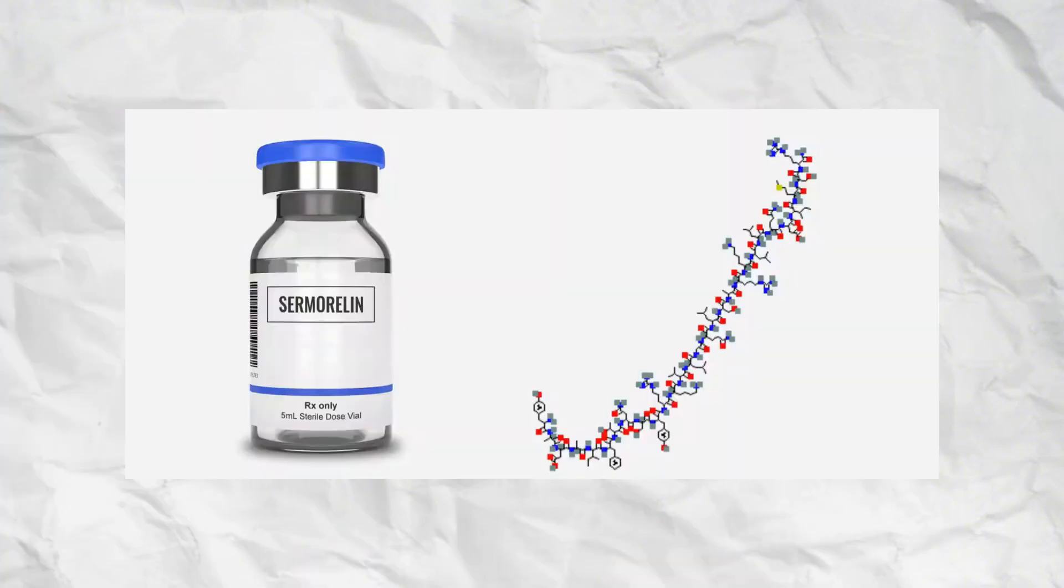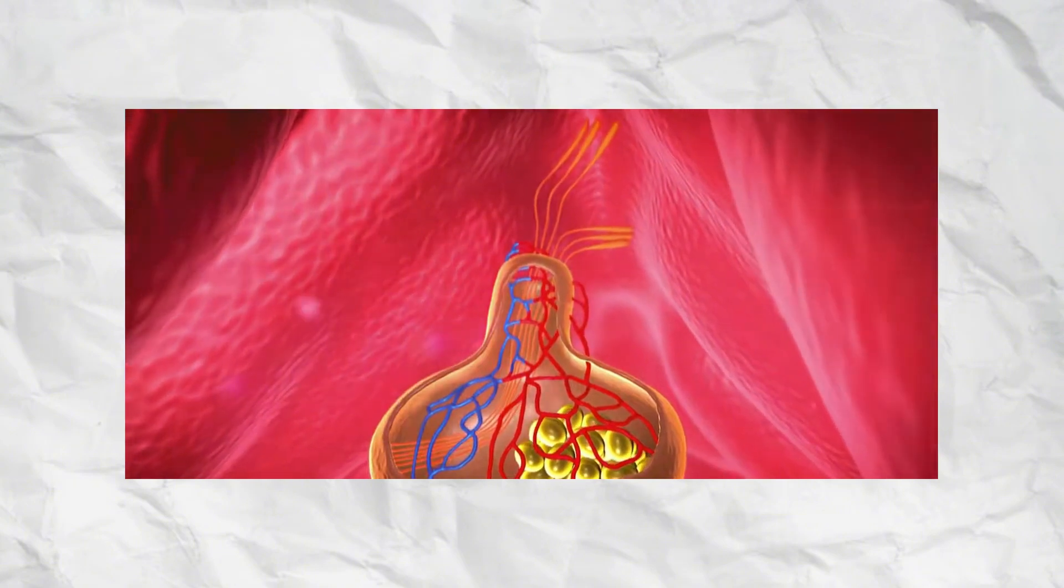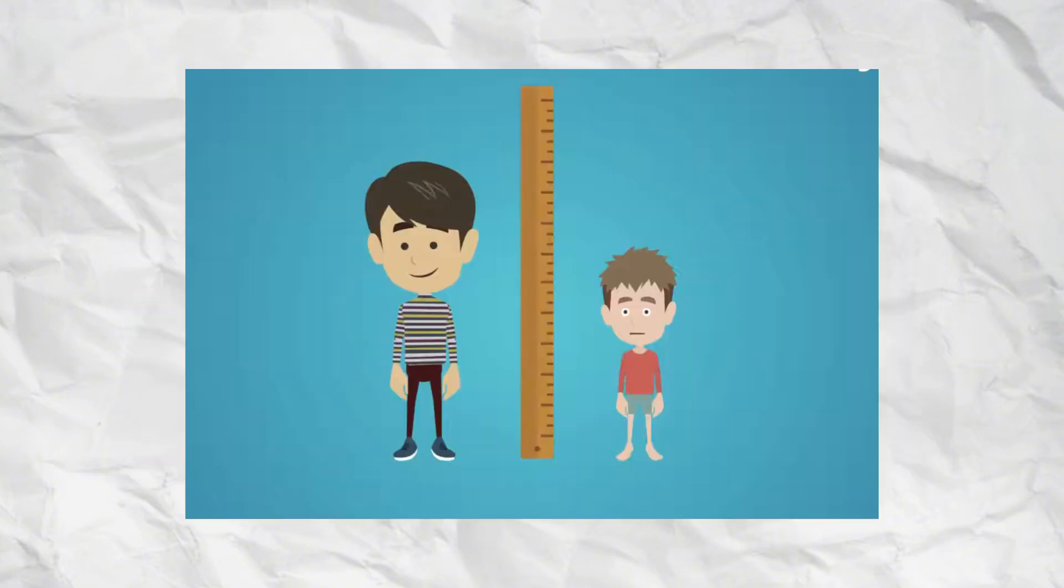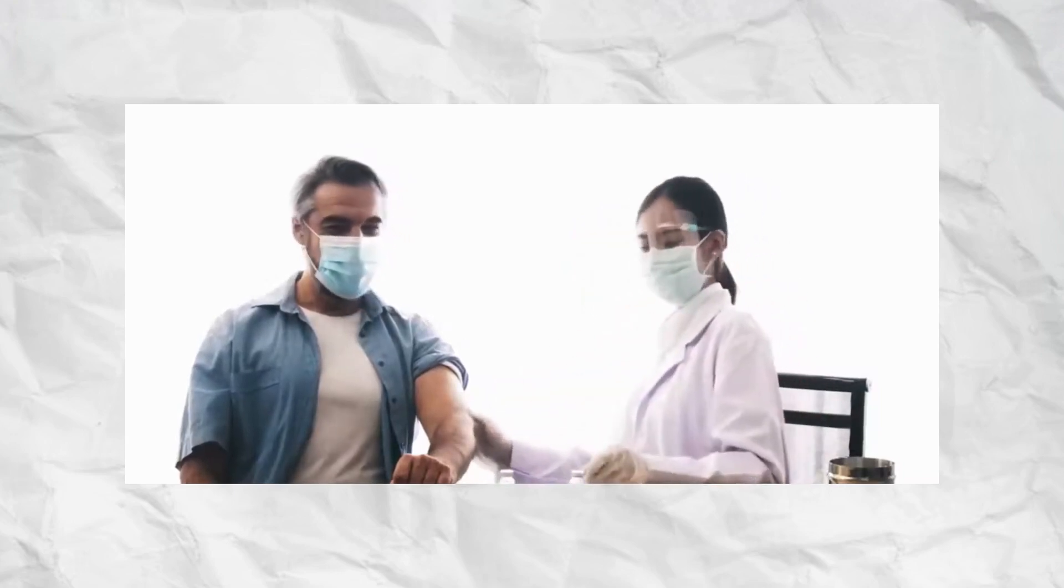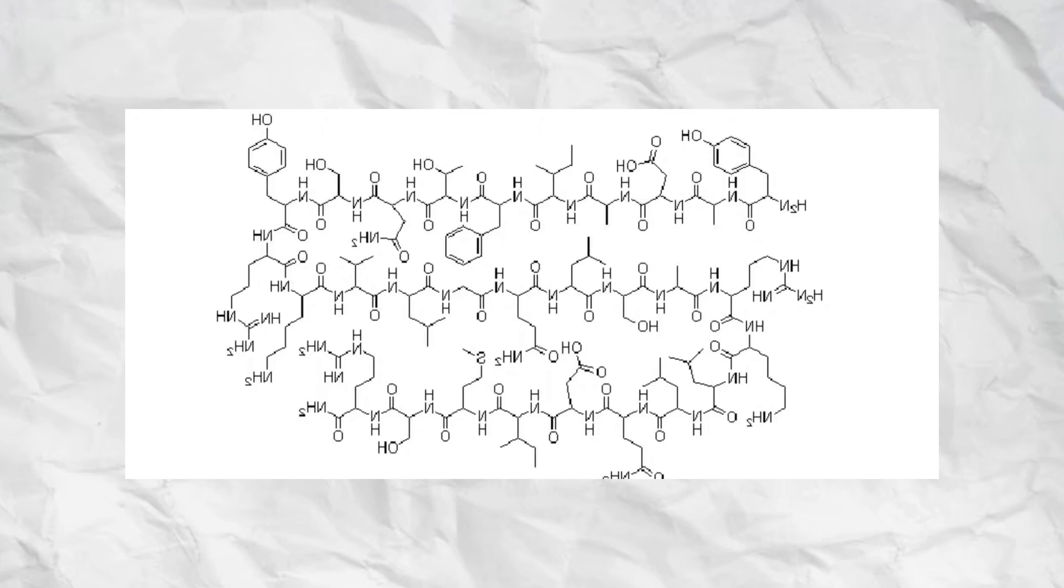Sermorelin is a synthetic peptide composed of 29 amino acids, the active fragment of natural growth hormone-releasing hormone, GHRH. It works by binding to GHRH receptors in the pituitary gland, stimulating the body to release its own growth hormone in short, natural pulses.